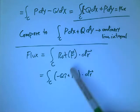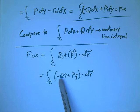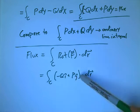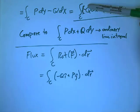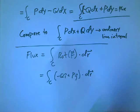More explicitly, you take P i plus Q j, and you rotate it, and that makes it into minus Q i plus P j. Do the ordinary line integral of that, it's going to be minus Q dx plus P dy. That's going to be the flux.